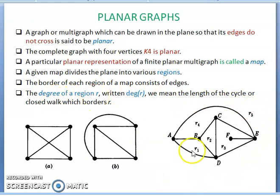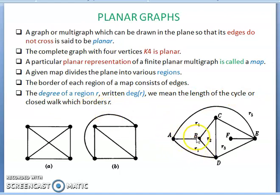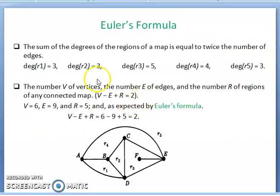The degree of a region R — written as DEG of R — means the length of the cycle or closed walk which borders that region. What is the degree of R1? The edges covering R1 are AB, BD, and AD — three edges — so the degree of R1 is 3. The sum of the degrees of regions of a map is equal to twice the number of edges.